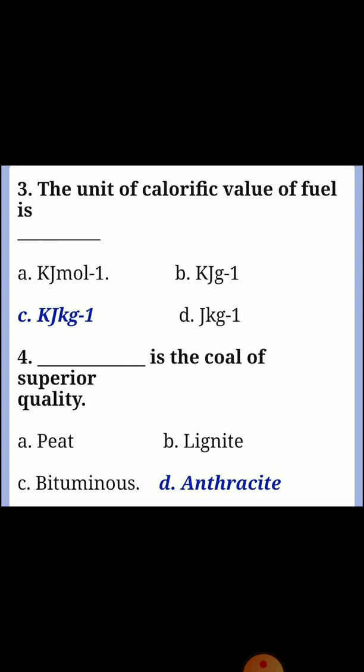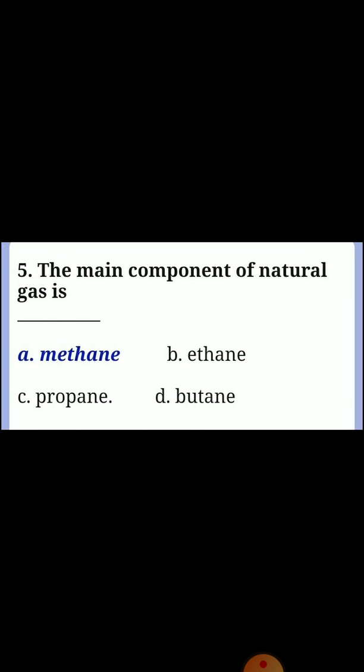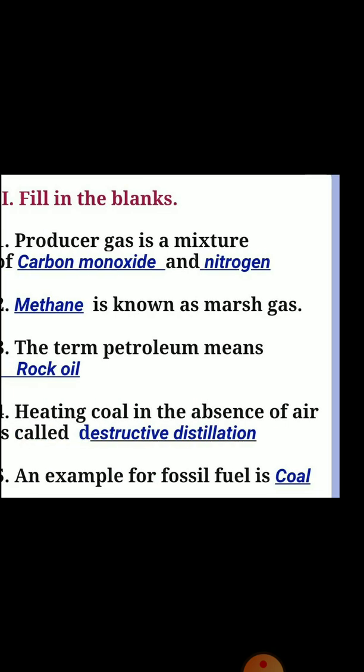Fourth one: which gas is the coal of superior quality? Answer D: Anthracite. Fifth one: the main component of natural gas is? Answer A: Methane.